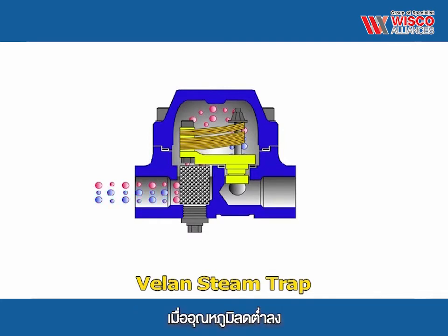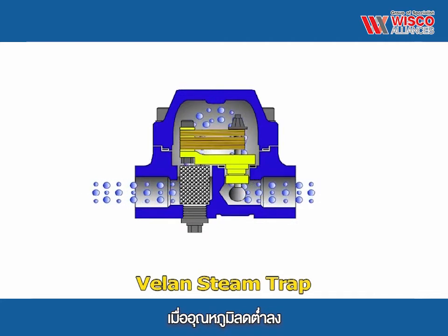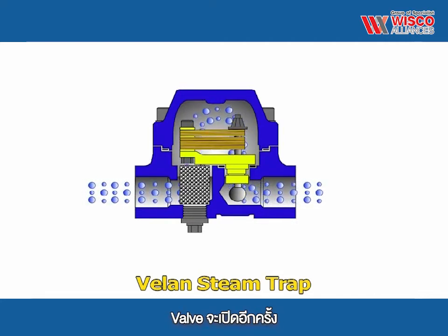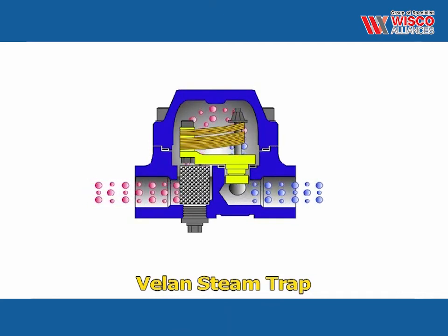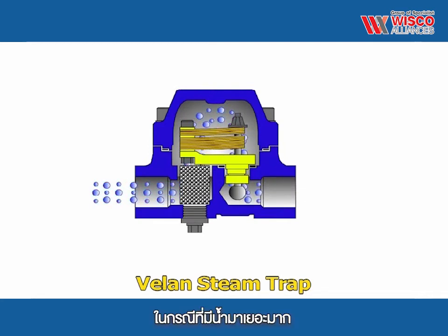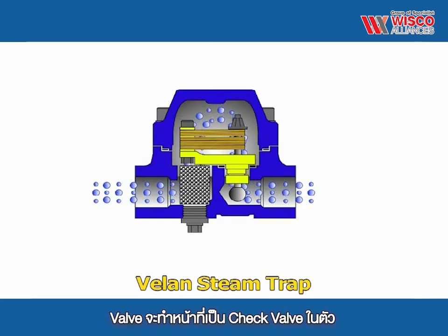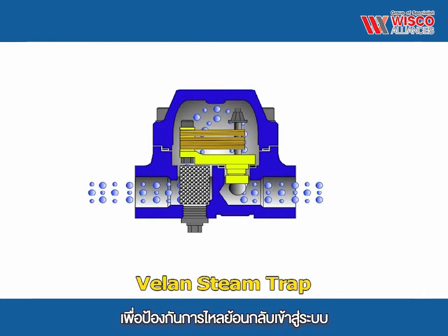When condensate in the line cools slightly, the line pressure overcomes the closing force of the bimetals and condensate discharge resumes. In the event of a sudden drop in upstream pressure, the valve and seat arrangement acts as a check valve, preventing reverse flow in the system.